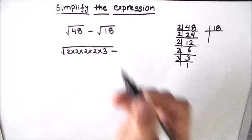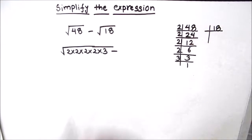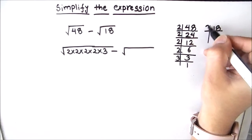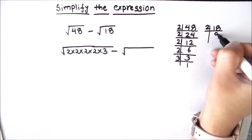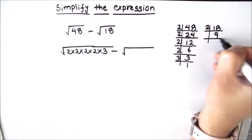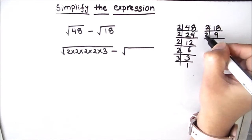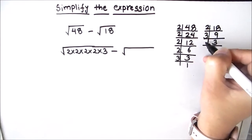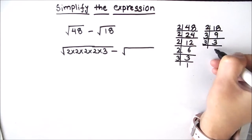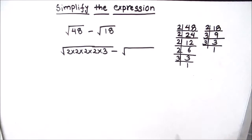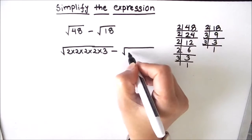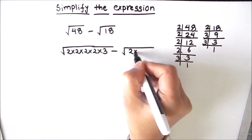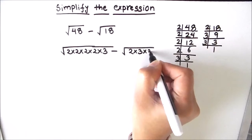Now we are going to find the factors of 18. 2×9=18. 9 is an odd number, it is divisible by 3. 3×3=9, and 3×1=3. So the factors of 18 are 2×3×3.